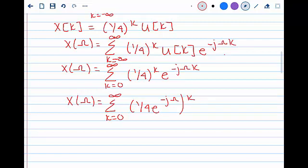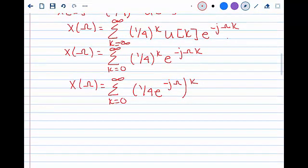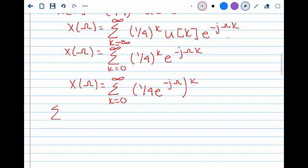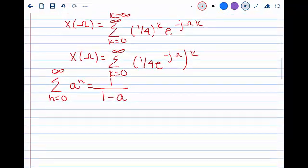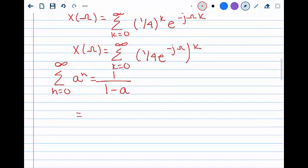Now we must use our summation knowledge to know that the summation from n equals 0 to infinity of a^n is equal to 1/(1-a). From this, we can use this knowledge to obtain that our answer for our DTFT is equal to 1 over 1 minus (1/4) times e^(-jω).